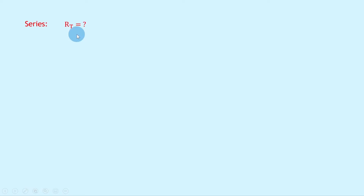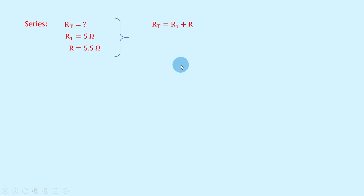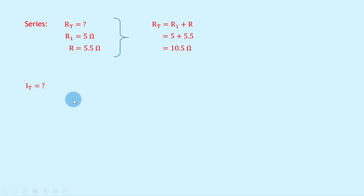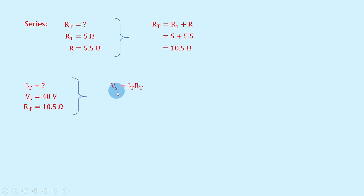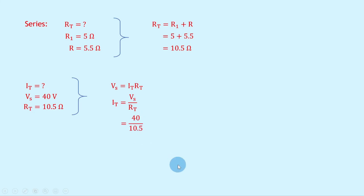For the final series combination, RT equals R1 plus R, so 5 plus 5.5 gives a total resistance of 10.5 ohms. Now using VS equals IT times RT and rearranging, IT equals VS over RT, so 40 divided by 10.5 gives a final current of 3.8 amps.